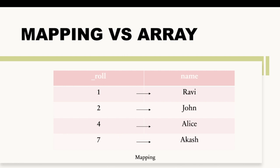If we do the same thing in mapping, we are not wasting any slots, because mapping works on a hash kind of data structure. It is similar to dictionaries in Python. Mappings are also much faster than arrays because they are not storing data in a continuous fashion — they store data randomly.